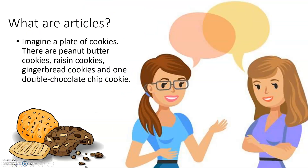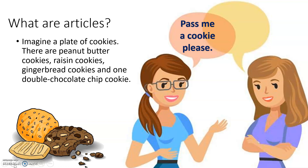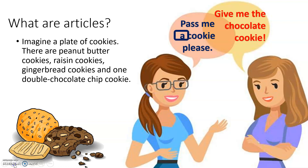So any excuse to talk about biscuits! What are articles? Well, imagine a plate of cookies in front of you. There are peanut butter cookies, raisin cookies, gingerbread cookies — all sorts of different types of cookies — but there's only one double chocolate chip cookie. Our first lady is saying 'pass me a cookie please,' whereas our friend has her eye on the chocolate one: 'give me the chocolate cookie.' The word 'a' is an article and the word 'the' is an article.